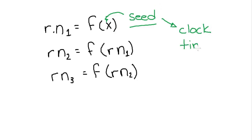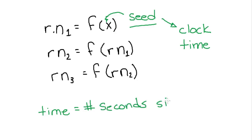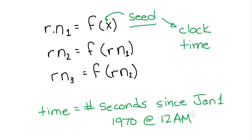In C++, it's the time() function. The time in computers is actually a number represented as the number of seconds since January 1st, 1970 at 12 AM. Because you run your computer at a different time every time you use it, you're going to put in a different number. That number is very difficult to predict, so you'll always get what appears to be a random number, or a random series of numbers.